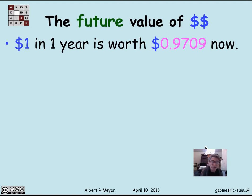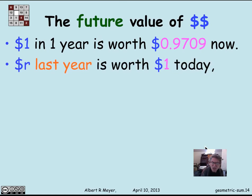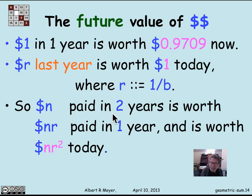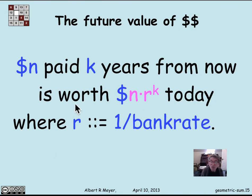Shifting perspective, how much money last year would be worth $1 today? By the same reasoning, the bank pays B times R today, so B times R equals $1, meaning R equals 1 over B — R is 1 over the bank rate. More generally, n dollars paid in two years is worth n times R paid in one year, which is worth n times R squared paid today. Iterating, a value of n dollars paid in k years is worth n times R to the k today, where R equals 1 over the bank rate.